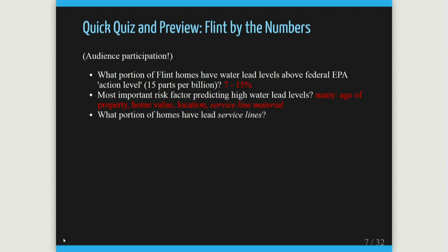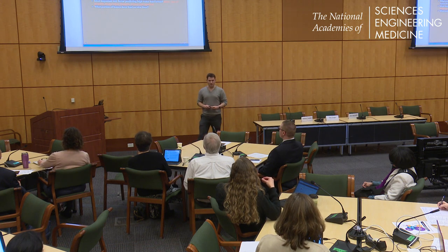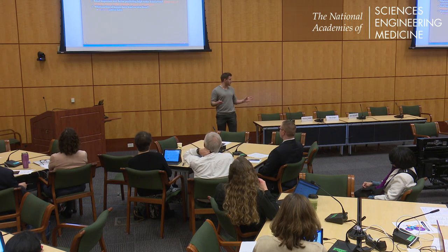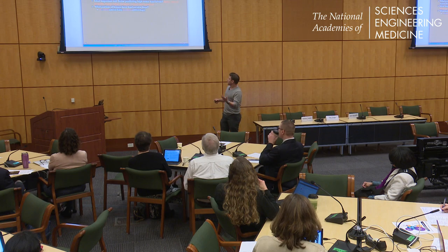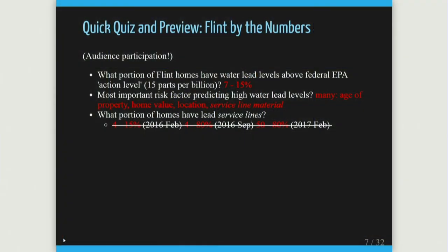What portion of homes in Flint have lead service lines? The service line is the portion that connects the home to the water system. Originally they said it was between 10 and 15% — that's what money was appropriated based on. Then it became clear it may be between 5 and 80%. They really had no idea. After we started doing replacements, based on the data points we had, we estimated it closer to 60 or 70%. Now we think it's between 65 and 75% — about two-thirds.